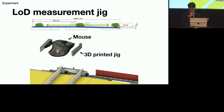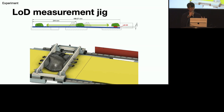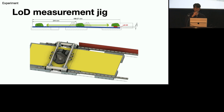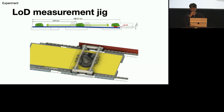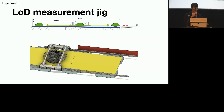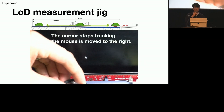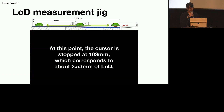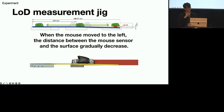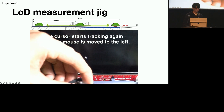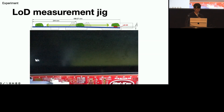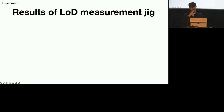The mouse was fixed to LM guide blocks using a 3D-printed jig that perfectly fits the mouse shape. The bottom of the mouse mated with the surface of the left plate, which was mounted flat, and the right plate was slightly slanted about 1.41 degrees. When sliding the mouse to the right, the distance from the mouse to the surface gradually increases, and the position where the cursor stops was recorded. Similarly, sliding the mouse to the left makes the distance decrease, and the point at which the cursor starts to move again was recorded.